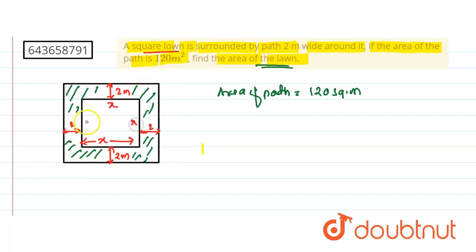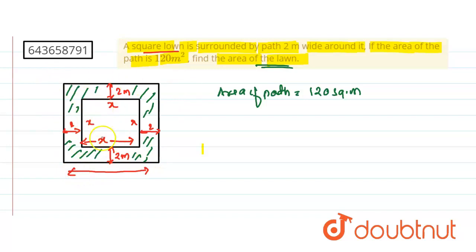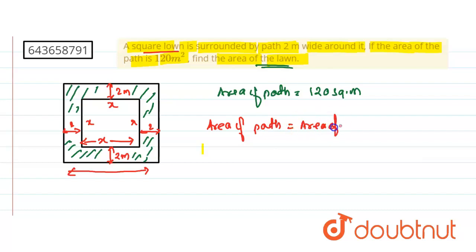Every side is x meters. The area of the path equals the area of the total field minus the area of the small lawn. So: area of path = area of total field minus area of lawn.